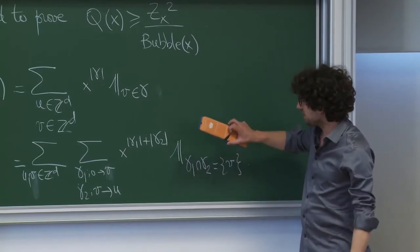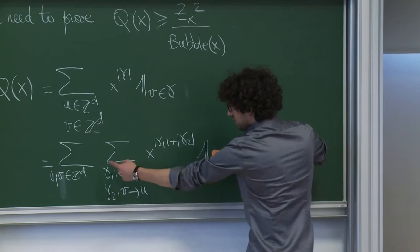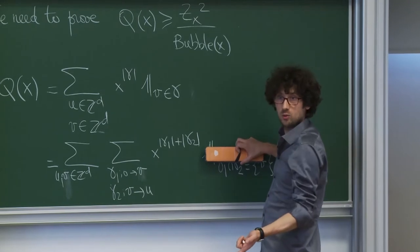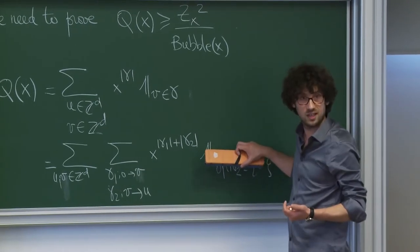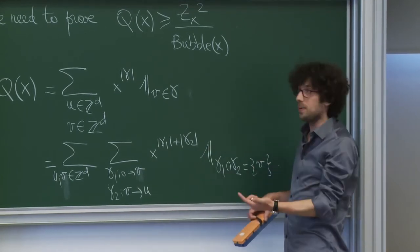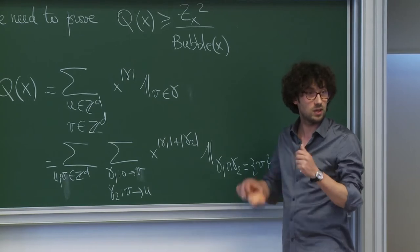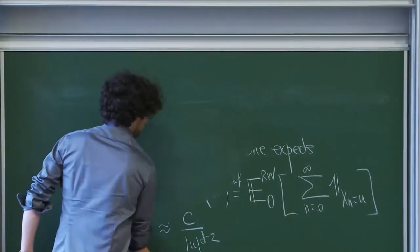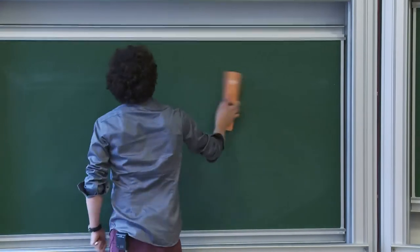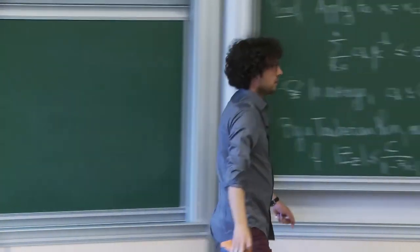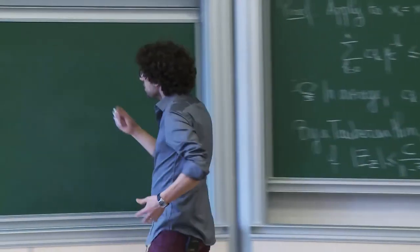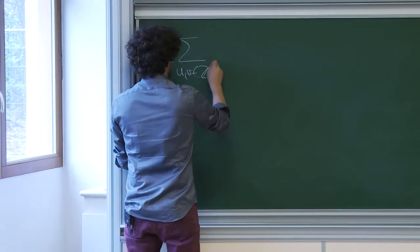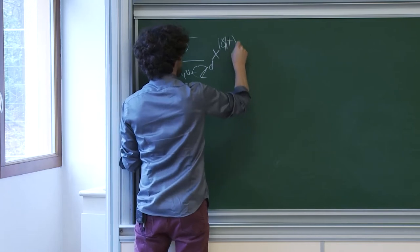We are going to write it as the thing without the condition, minus the thing where we force the two to intersect somewhere other than v. Without the condition, if you think about it, it's just z(x) squared—there is no condition, you integrate out the second walk to get z(x), then the first one to get z(x). And the error term, we are going to bound it in terms of the bubble diagram times z(x) squared.